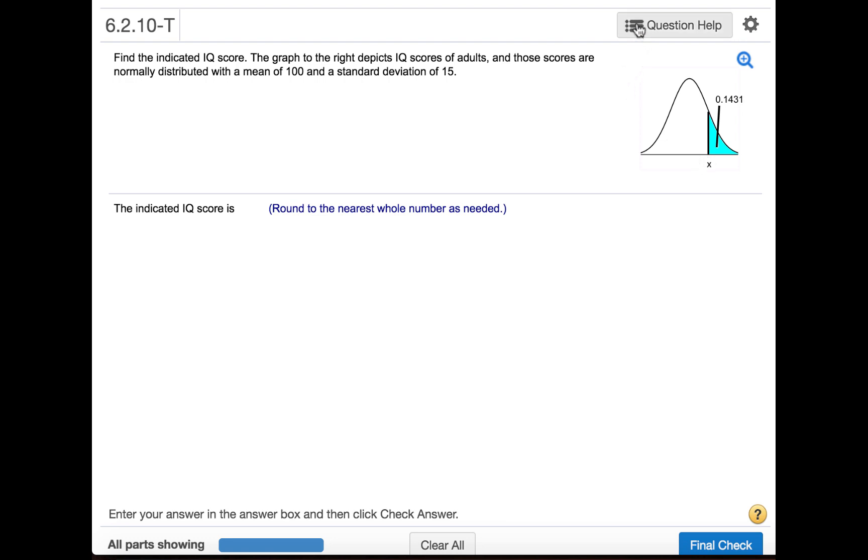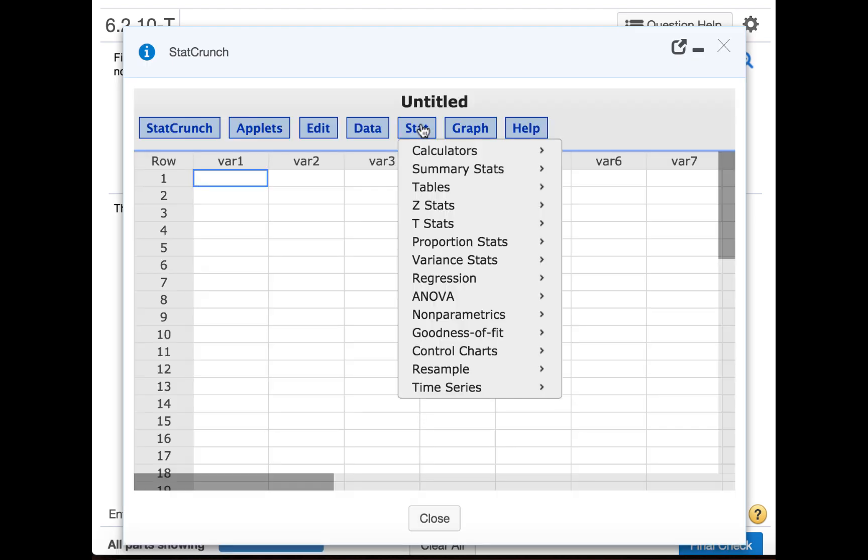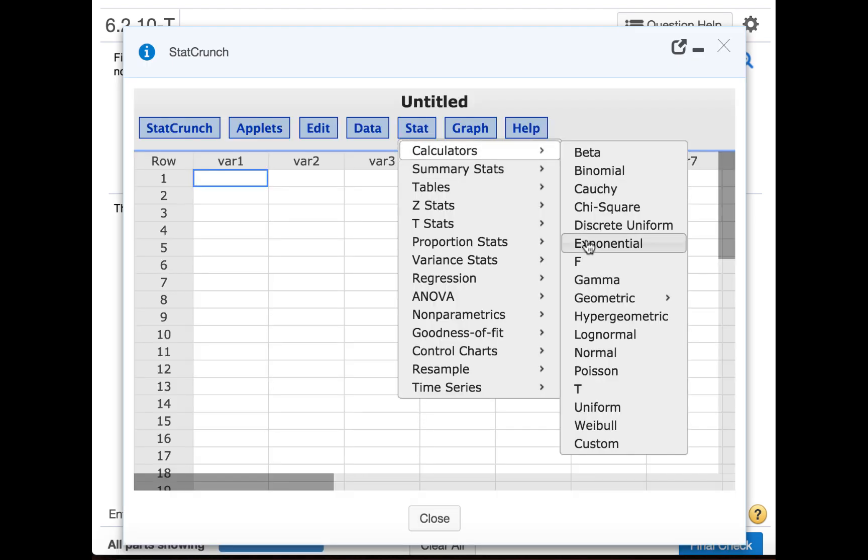We can do this using StatCrunch. We'll click question help, StatCrunch, Stat, Calculators, Normal.